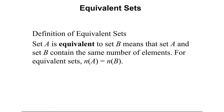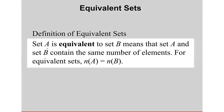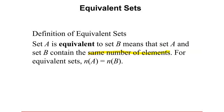Let's define equivalent sets. Set A is equivalent to set B means that set A and B contain the same number of elements — same number, not necessarily the same elements. When two sets are equivalent, they have the same cardinality, meaning N of A is equal to N of B.